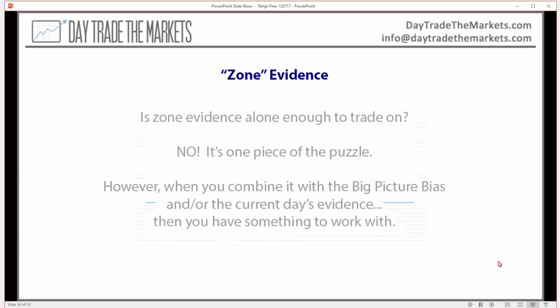Is big picture bias alone enough to trade on? No. Is the zone evidence alone enough to trade on? No. It's just one piece of the puzzle. But when you combine it with the big picture bias and today's structure, which I'll talk about, then you really have something to work with. You've got a strong scenario where you can make a lot more sense of what's going on. You're not dependent on one piece or one indicator — you're trying to put different levels of market context together to make sense of the story.